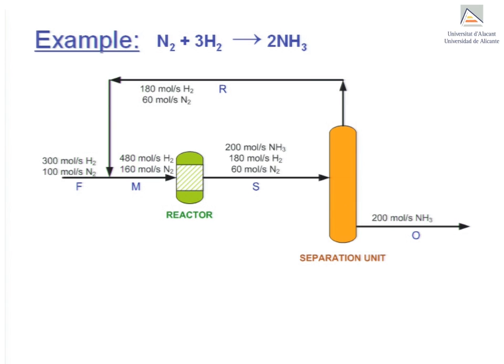In stream F, nitrogen and hydrogen enter the process in stoichiometric proportion. Then in the reactor, these reactants are consumed in stoichiometric proportion. Therefore, in stream S we have, apart from the newly formed ammonia, some unreacted nitrogen and hydrogen that are still in stoichiometric proportion.